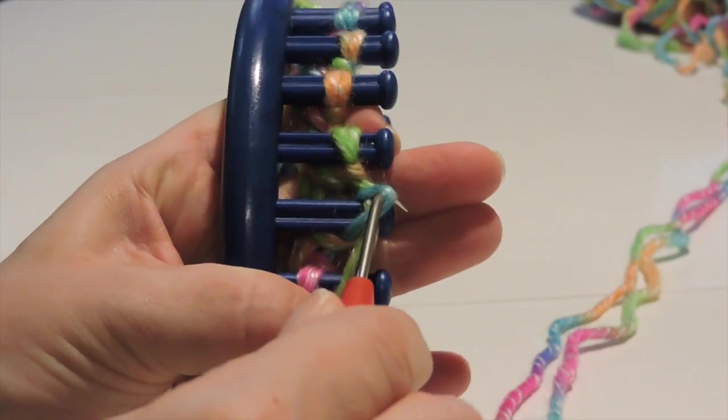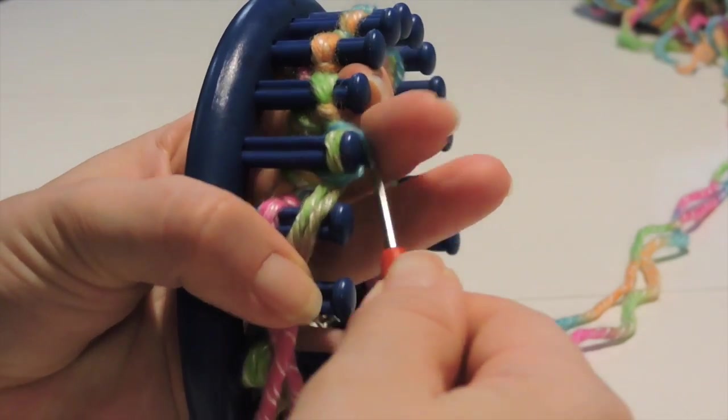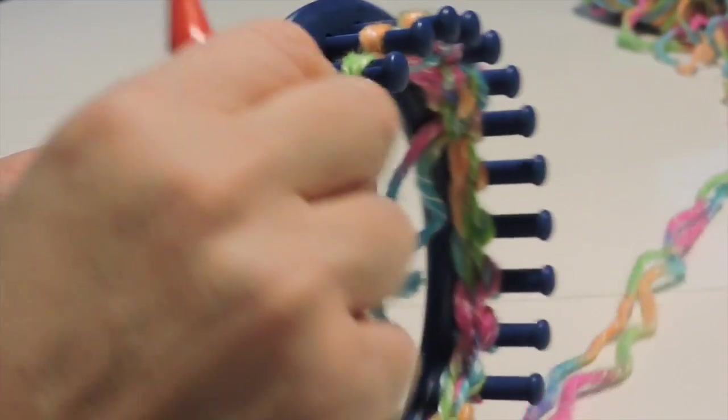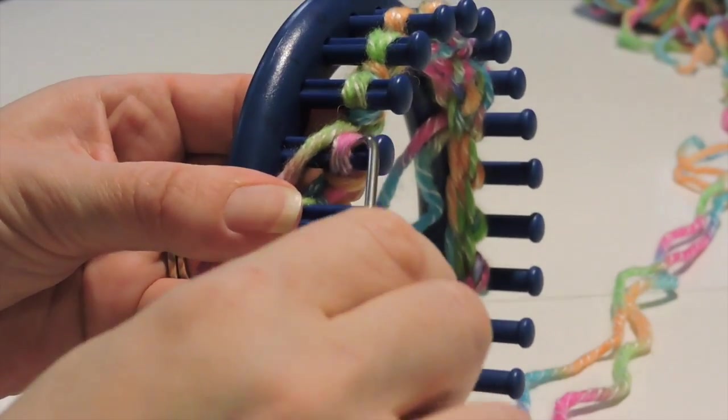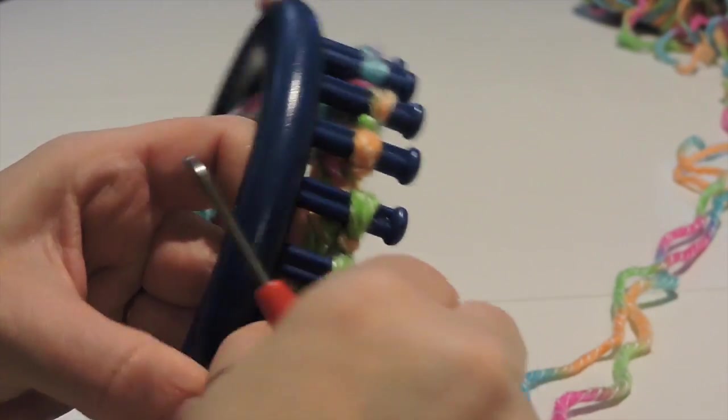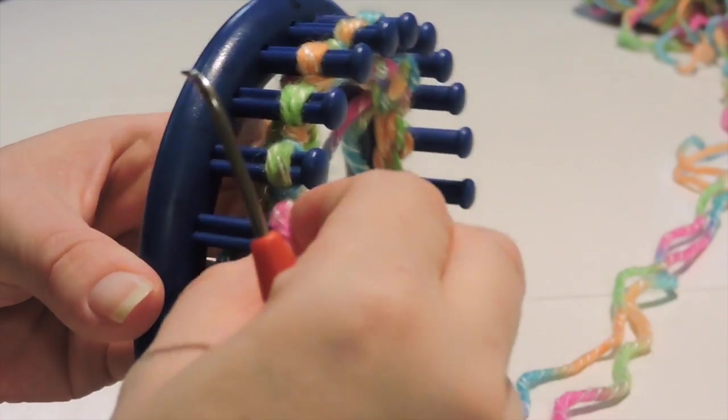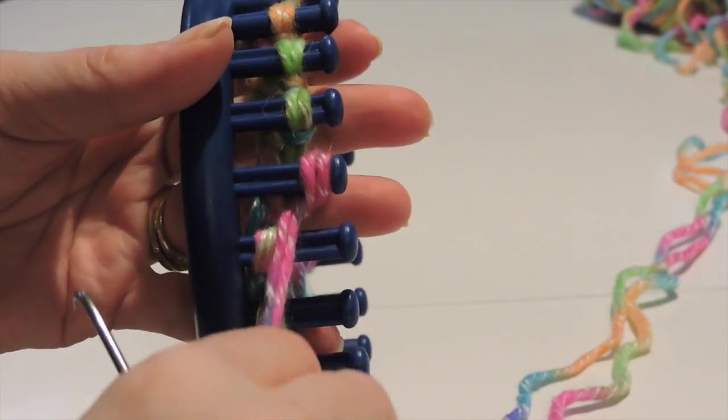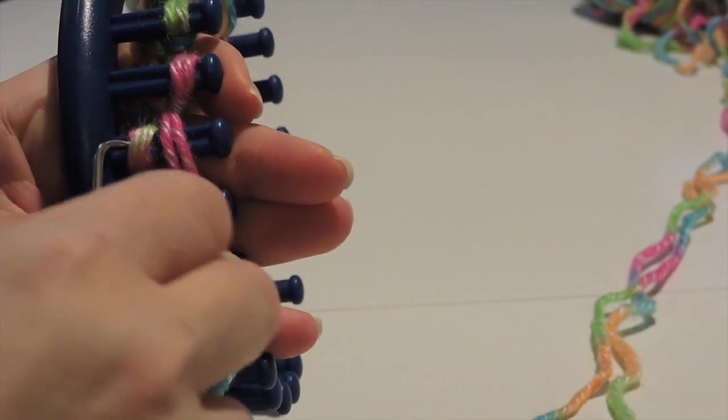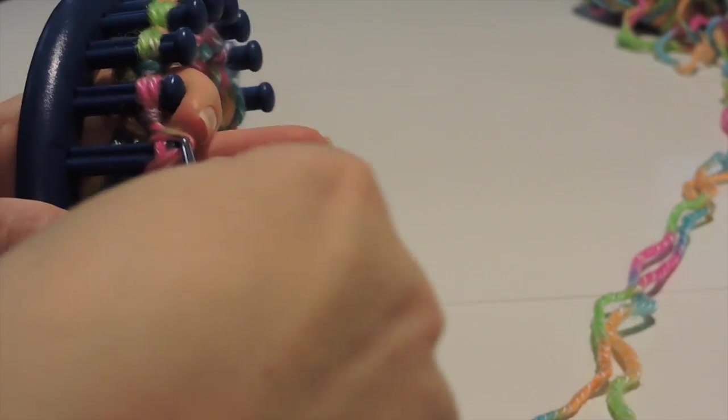Again, this is our flat knit stitch and our purl stitch. And we'll want to do this for six rows. A row is considered from the start of the anchor peg, going all the way around, meeting back to the anchor peg.